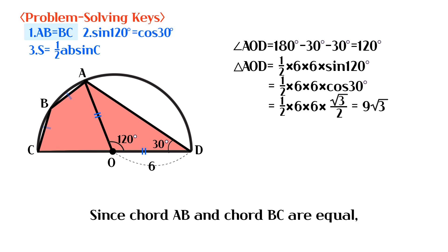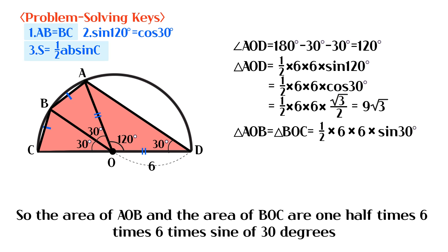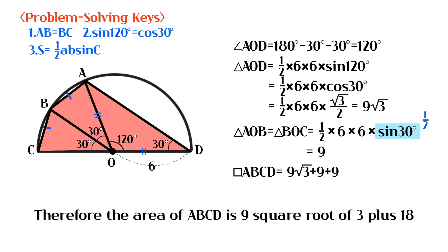Since arc AB and arc BC are equal, the angle AOB and the angle BOC are the same. So the area of AOB and the area of BOC are each one-half times 6 times 6 times sine of 30 degrees. Therefore the area of ABCD is 9 square root of 3 plus 18.